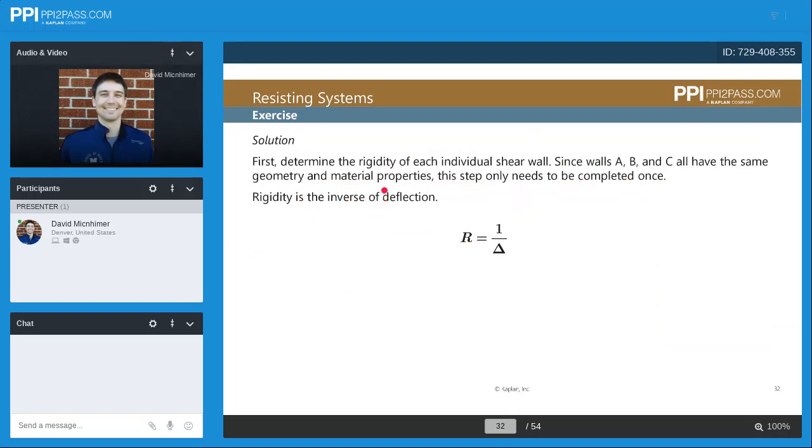First, we're going to determine the rigidity of each individual shear wall. Since walls A, B, and C have the same geometry and the same material properties, this step only needs to be completed once. We also need to keep in mind that rigidity is the inverse of deflection, so R equals 1 over delta, or 1 over deflection.